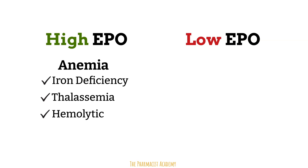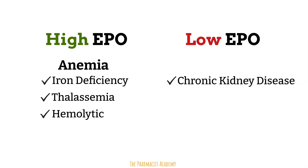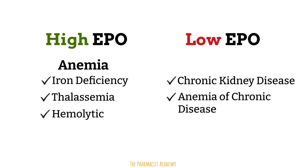On the right, we have conditions associated with low EPO. In chronic kidney disease, there is progressive worsening kidney function and patients usually present with a decrease in EPO production. Anemia of chronic disease occurs in patients whose current illness — usually cancer, infections, or other immune-mediated diseases — elicits an active inflammatory response leading to reduced iron uptake, destruction of precursor red blood cells, and decreased EPO production and EPO receptors in the bone marrow. In polycythemia vera, a type of blood cancer, the bone marrow makes too many red blood cells, so the body does not release EPO to stimulate further production.